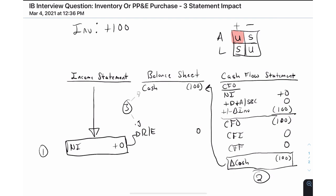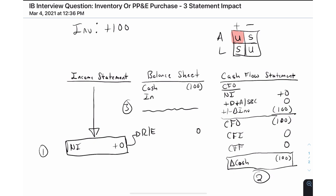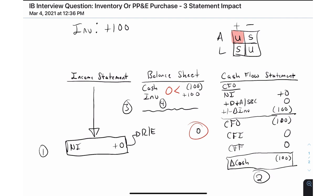Now we go to step four: fill in the pieces. At the end we need a balancing balance sheet, and we're missing an item to make it balance. Step back and think about the substance of the transaction — we put out $100 to buy inventory, so our inventory balance goes up by $100. The net impact on the asset side is zero, and the impact on the other side is zero. Balance sheet balances — that's how you adjust for the purchase of inventory.